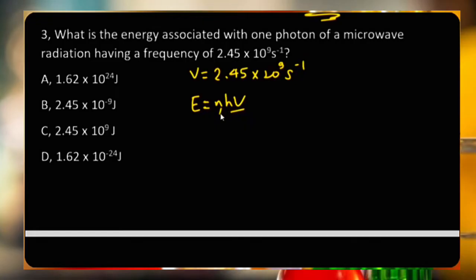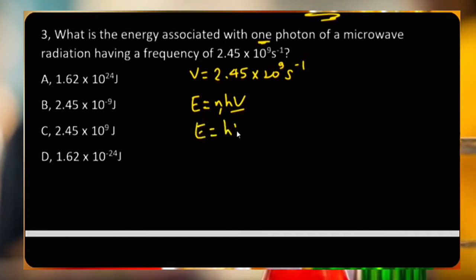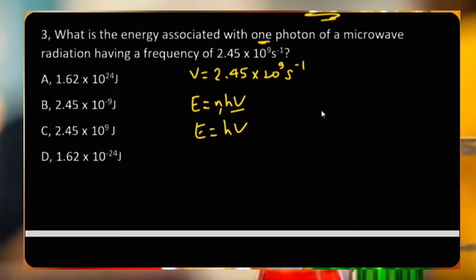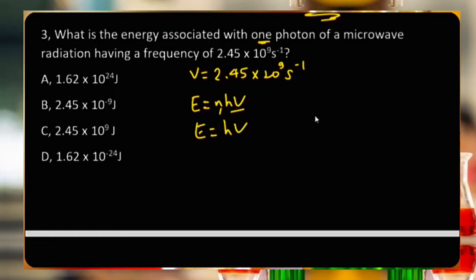For one photon of microwave radiation, N equals 1. So energy equals H times V, where H is Planck's constant, 6.626×10⁻³⁴.